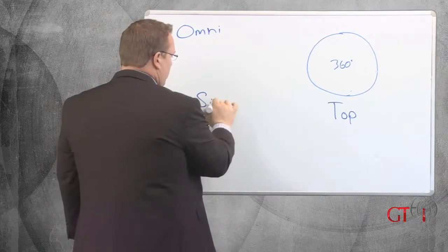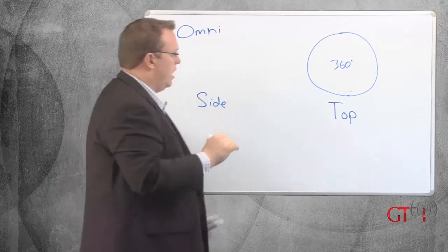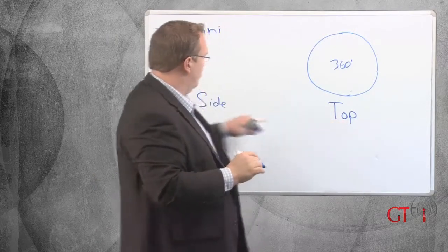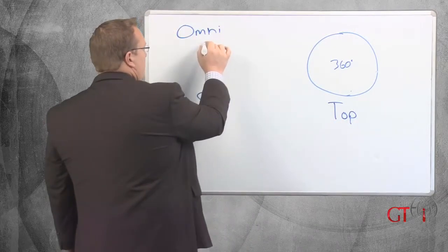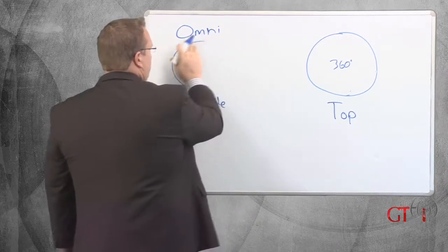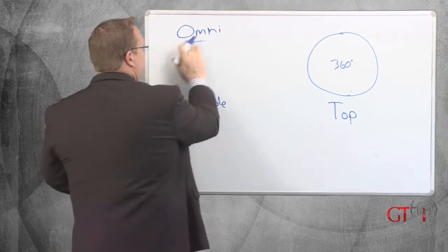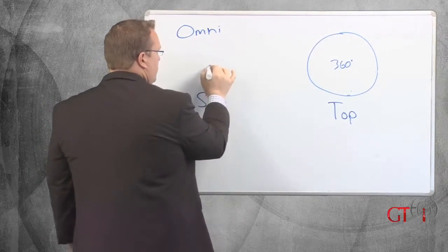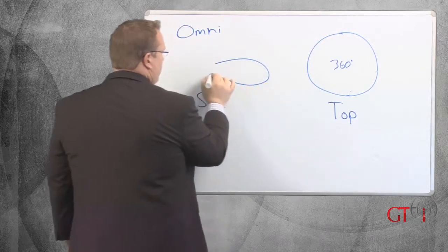But for the sake of the discussion, anything from the top has a perfect circle of 360 degrees of similar coverage. The side view, okay, so we're talking this is azimuth, this is elevation. The side view may look something completely different.